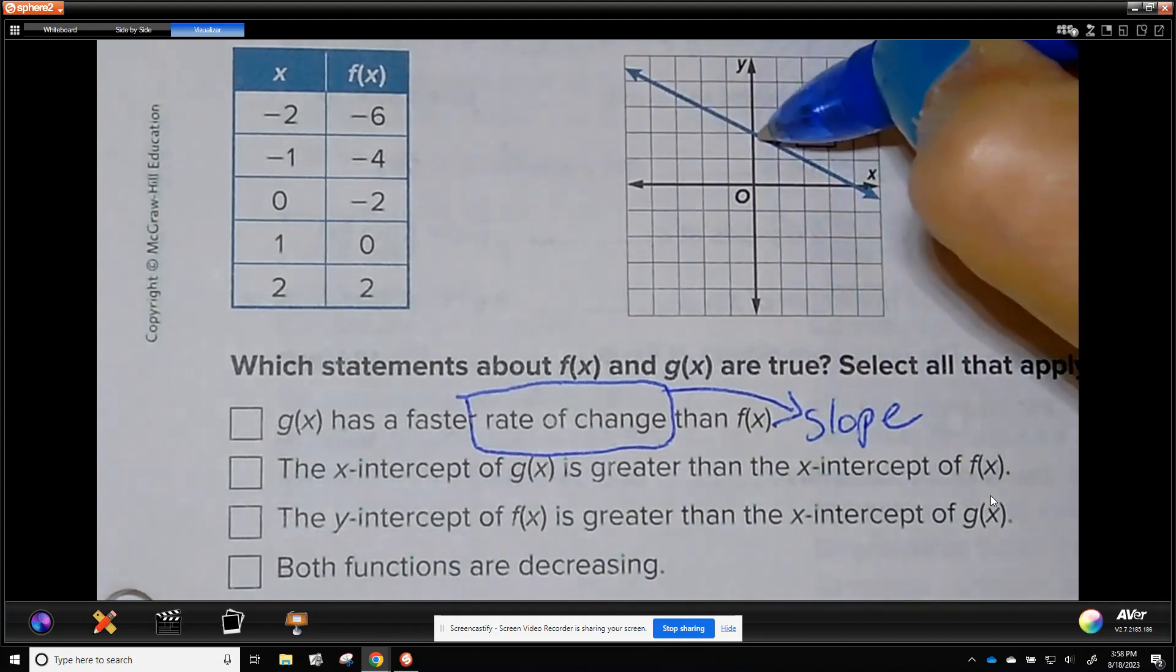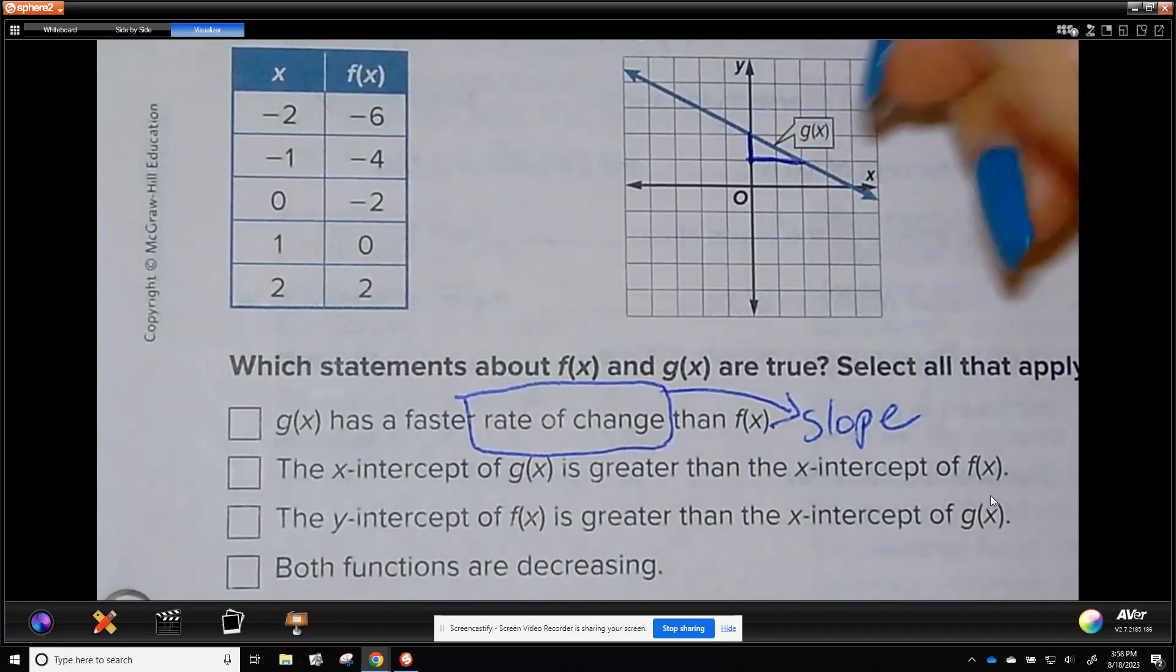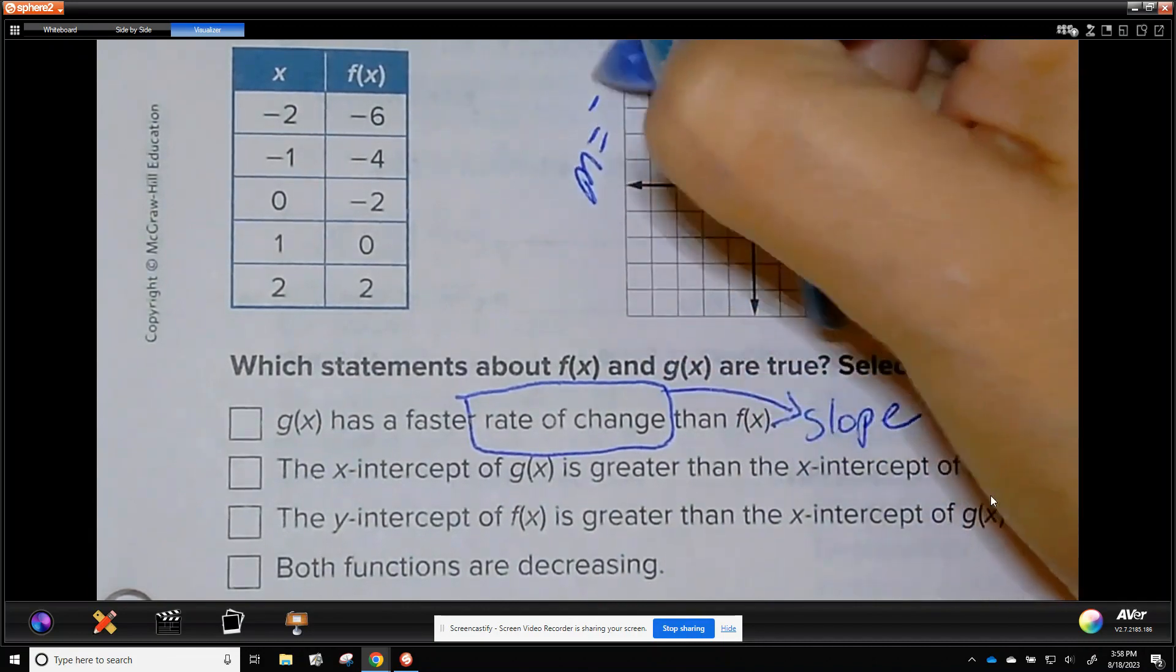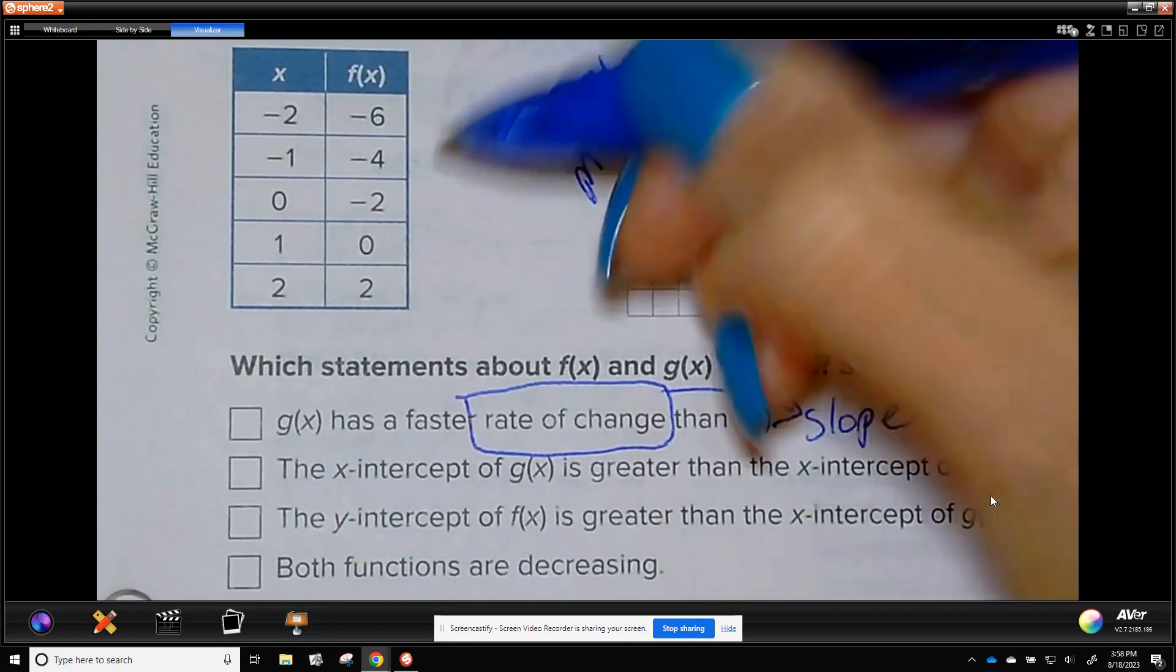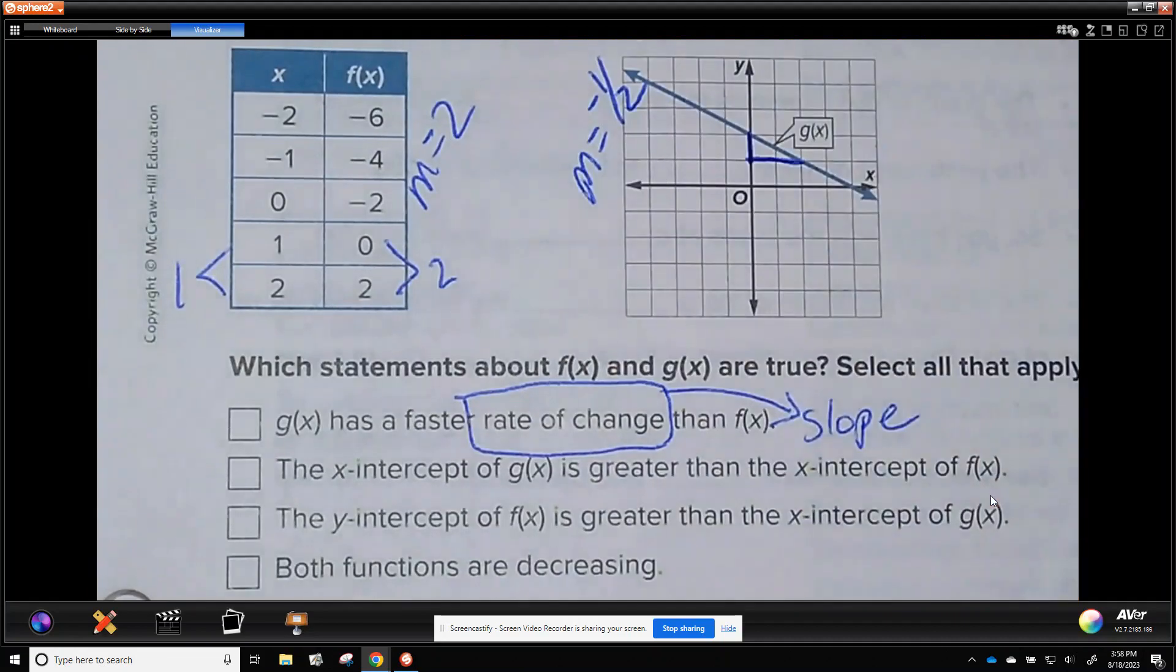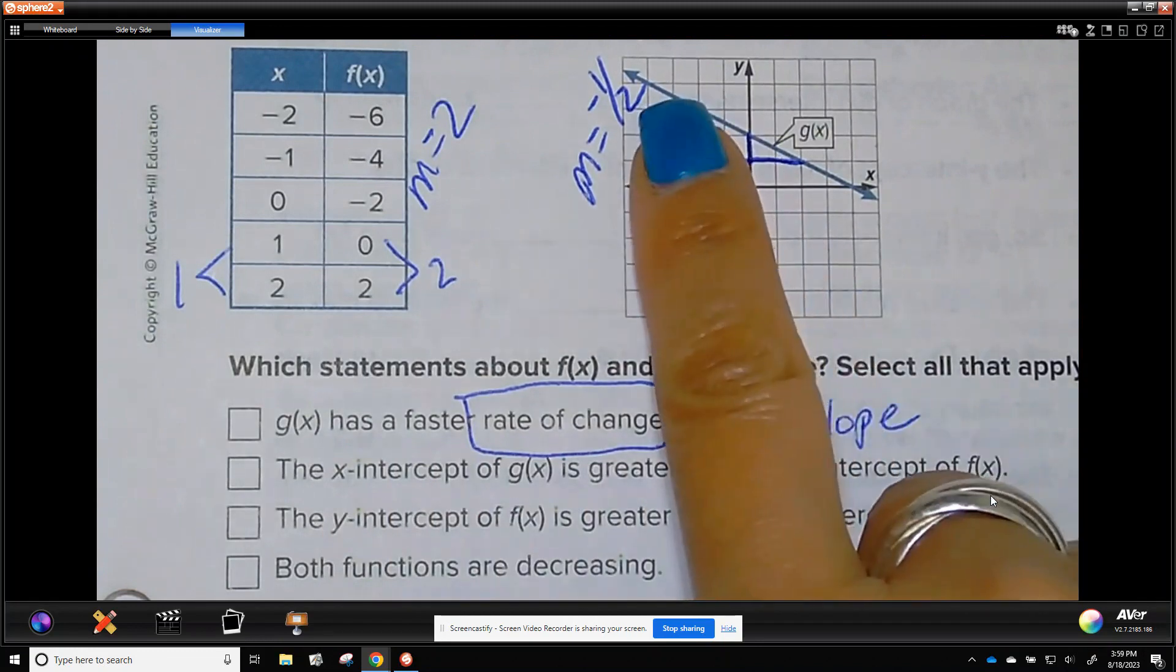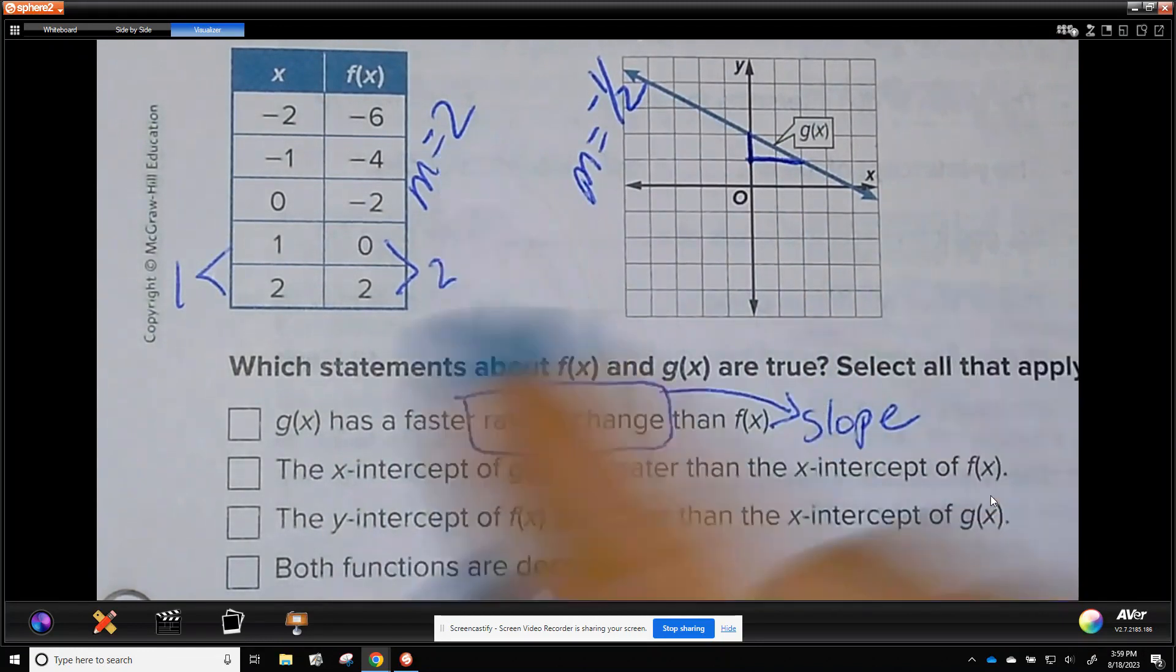So the slope of this is negative. Down 1, right 2. So the slope of this one is negative 1 half. The slope of this one is 2 over 1. So 2. So g has a faster slope than f. g slope is negative 1 half. f is 2. That is not true.